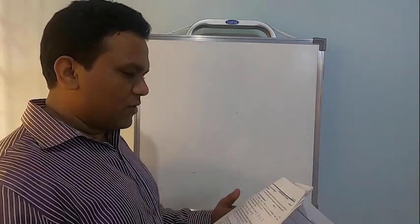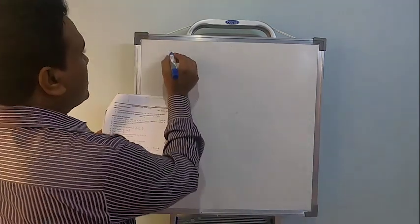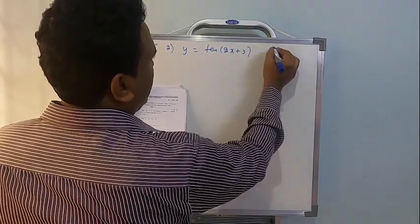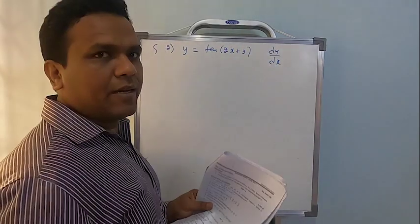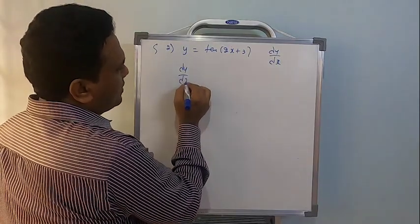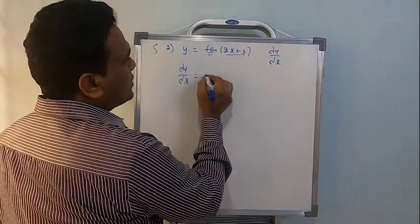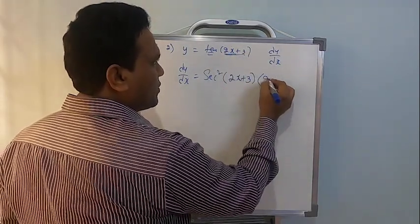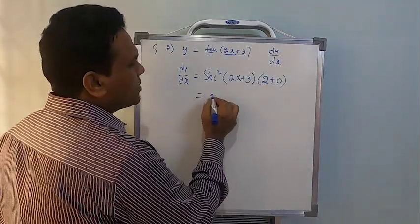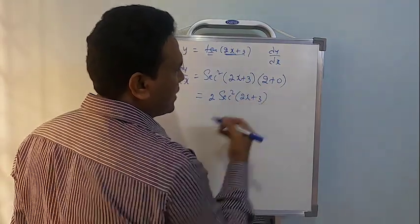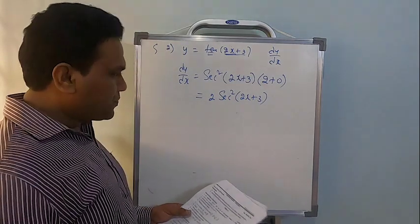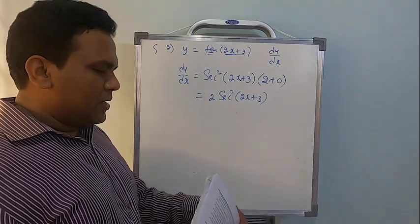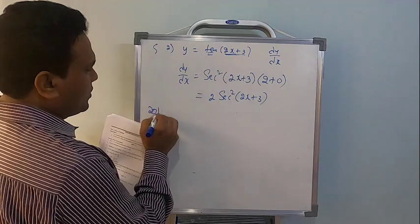In the 2016 supplementary, if y = tan(2x + 3), find dy/dx. Differentiating: first for tan, then for (2x+3). dy/dx = sec²(2x + 3) × 2 = 2·sec²(2x + 3).